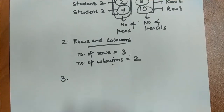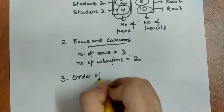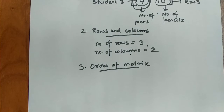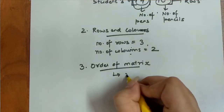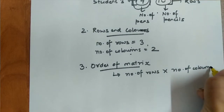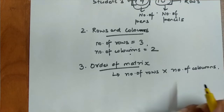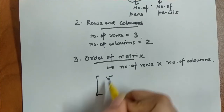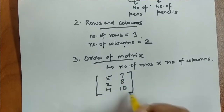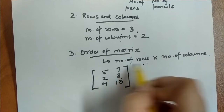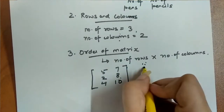The third terminology we cover in this chapter is the order of a matrix. The order of a matrix is defined as the number of rows into the number of columns. So order of matrix equals number of rows × number of columns. For example, let's take a matrix and identify its order using this definition.